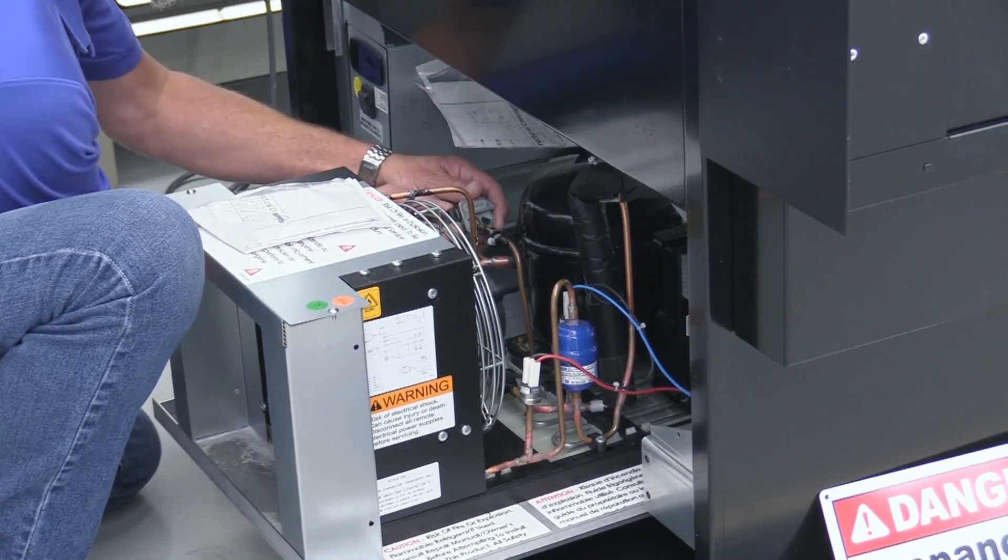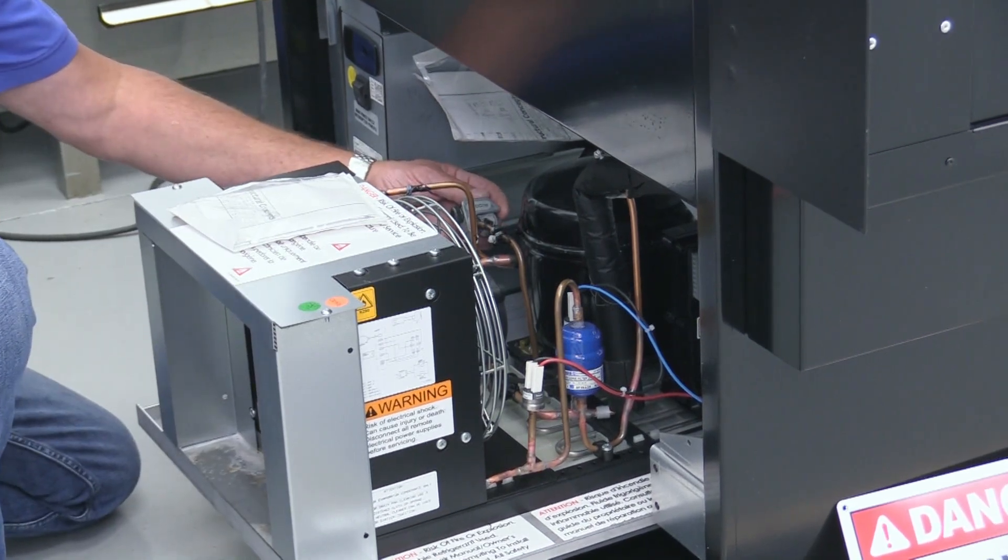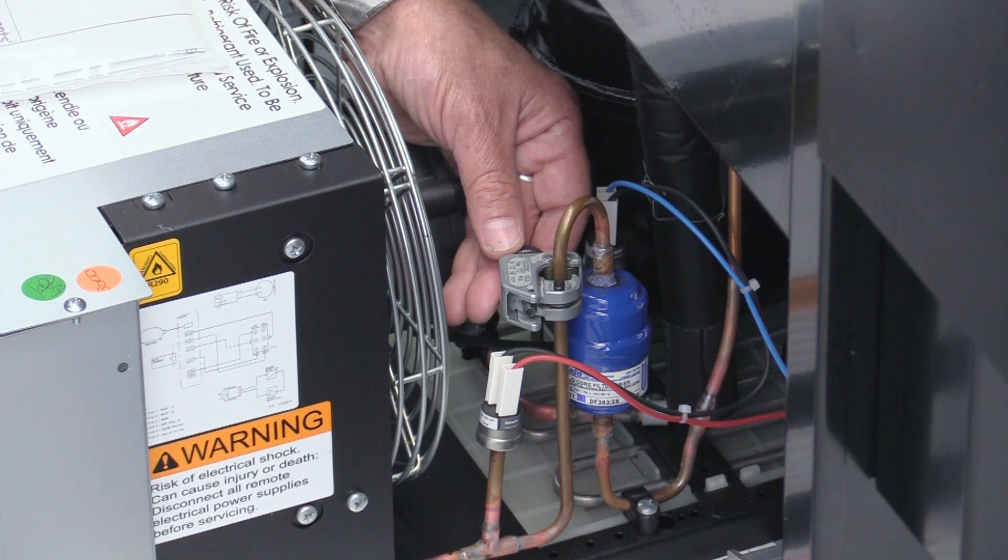Cut out the failed components using a tubing cutter. Keep system exposure to the environment to a minimum and replace the filter dryer shown in blue.